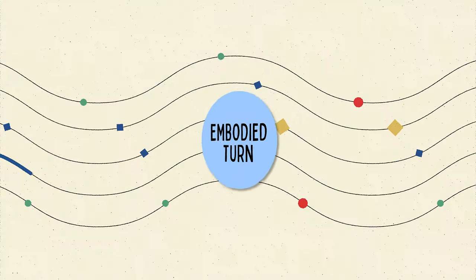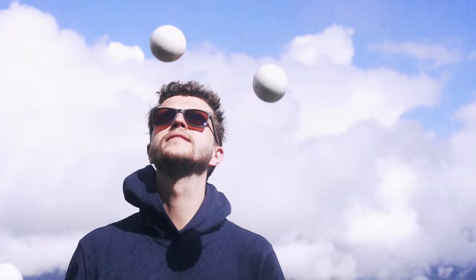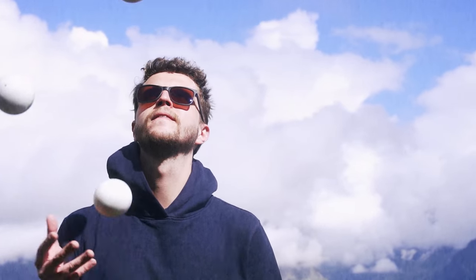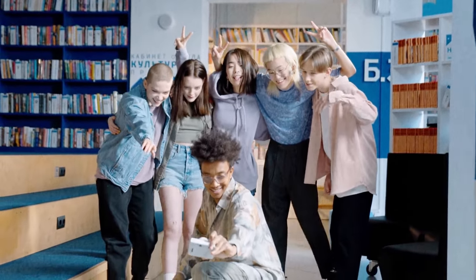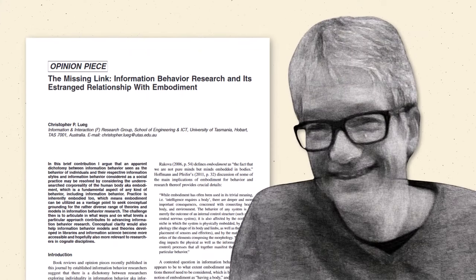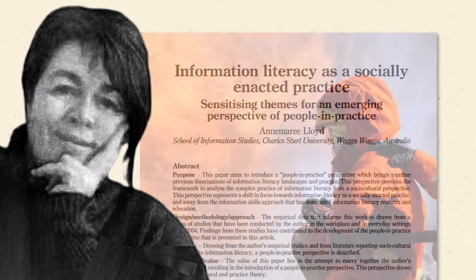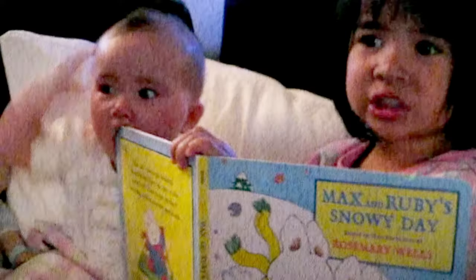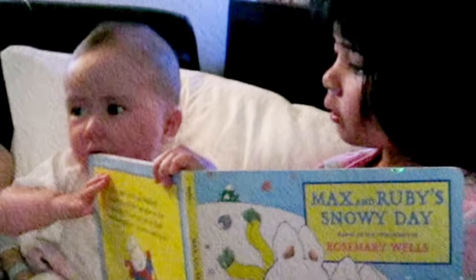An embodied turn is happening in information science right now. After all, our senses are our primary information acquisition channels. Our muscles have memories that may never coalesce into thoughts, words, or narratives. Our bodies — through their facial expressions, gestures, form, and adornment — project much information about ourselves, including our moods, health, identities, and social and cultural affiliations. Christopher Lueg, an embodied turner in information science, is exploring how variations in the body cause people to experience and use information systems differently. Anne-Marie Lloyd is reimagining the concept of information literacy to include a larger constellation of corporeal and social activities. Research by librarians on very early reading practices heartwardingly reports that before reading books, babies like to taste them.